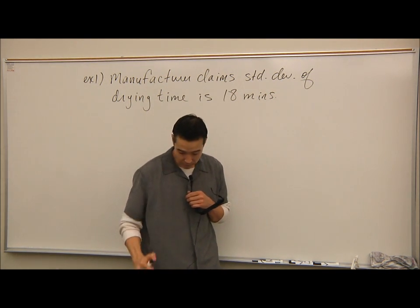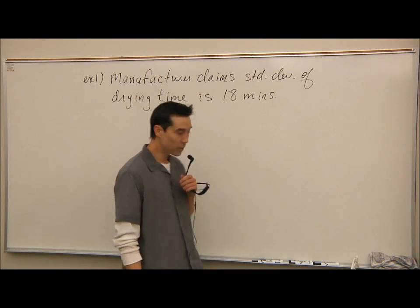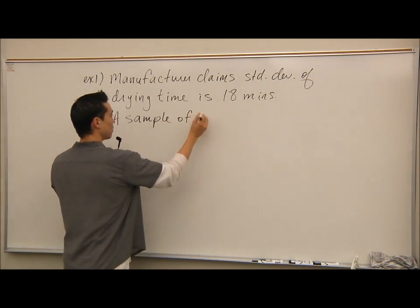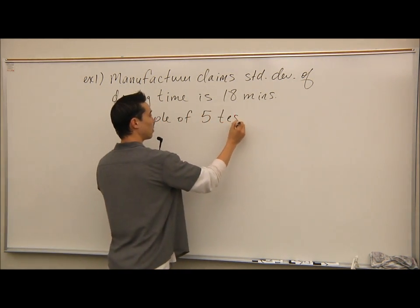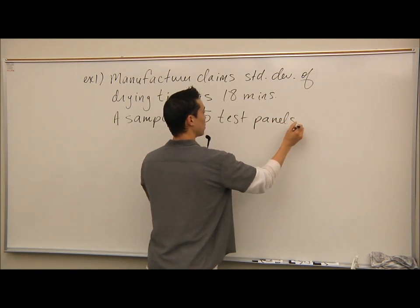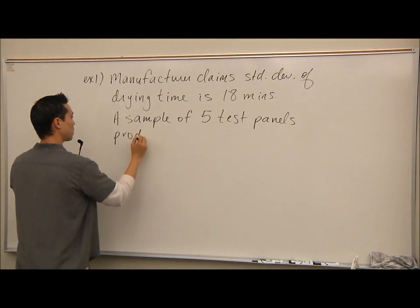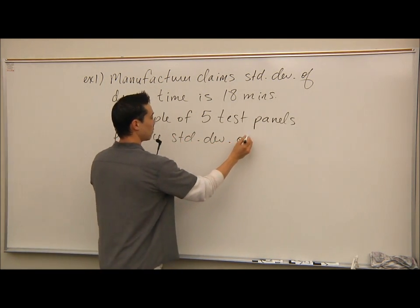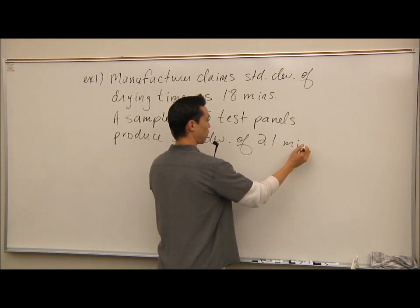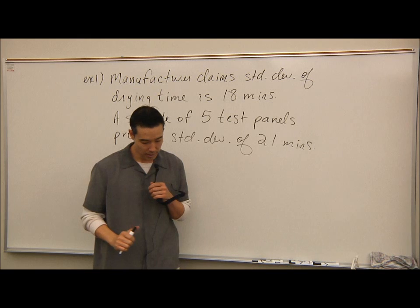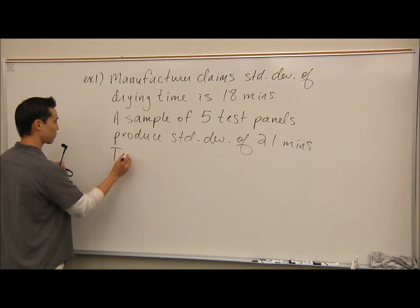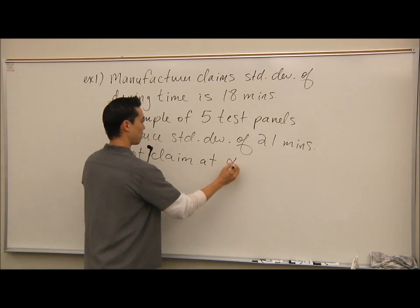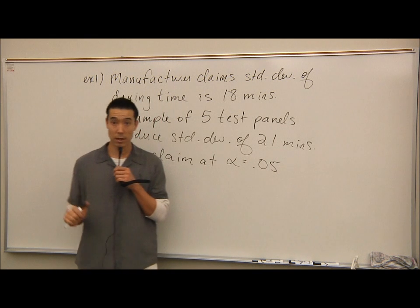A sample of five test panels produce a standard deviation of 21 minutes. And it says test claim at alpha equals 0.05. Okay, so a couple of things.